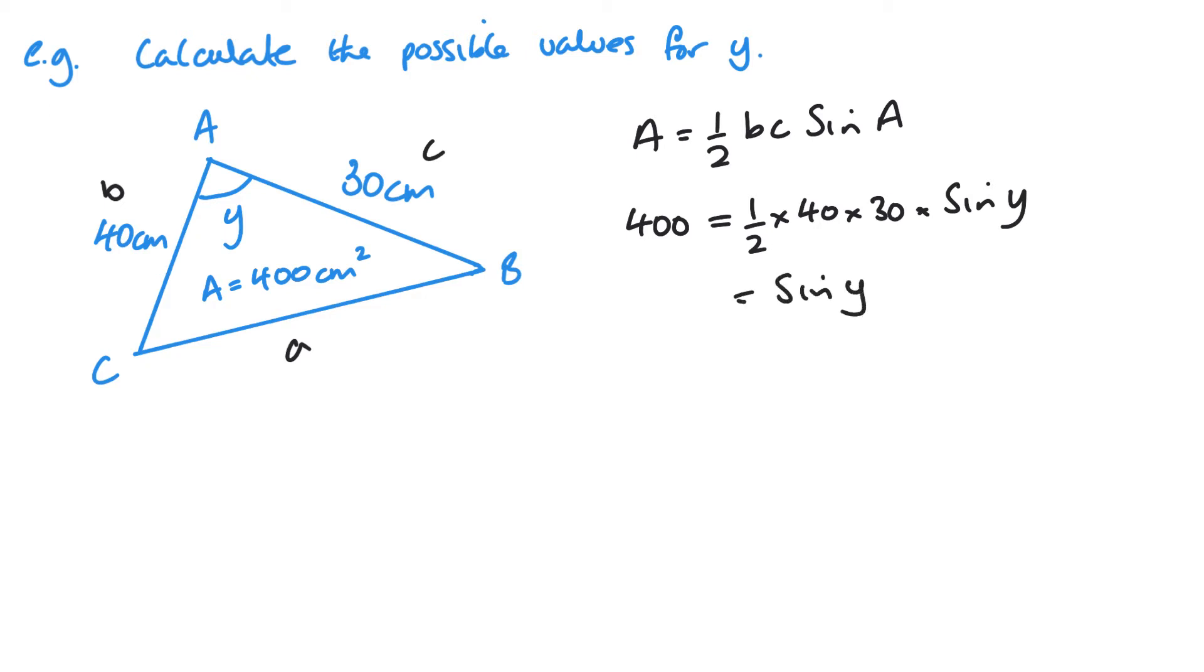So getting sine Y on its own, I'll need to essentially times by 2 and divide by my 40 and my 30. We'll sort that out first and then divide by it.